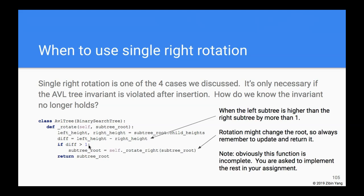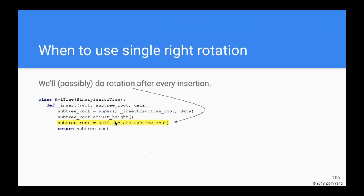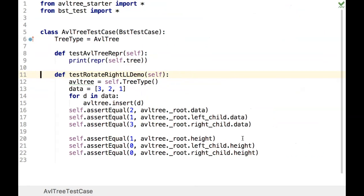The `rotate` method will eventually handle all four cases depending on height conditions. We call rotate after we do the insertion — in `_single_insert`, after inserting and adjusting the height, we then call rotate. This should be all that it takes to handle the left-left case.